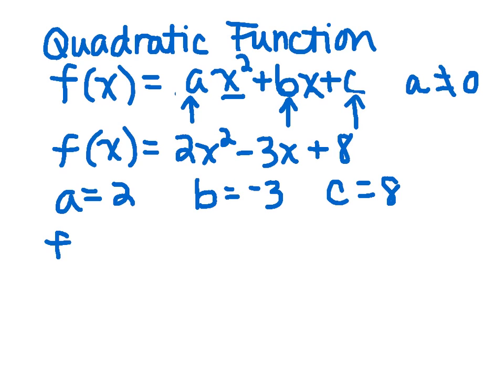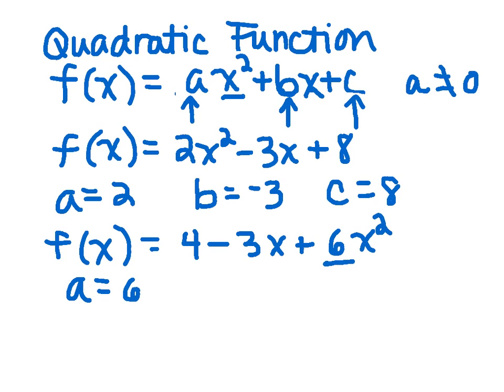Sometimes they might switch up the order on you. It would be like f(x) equals 4 minus 3x plus 6x squared. In this situation, although 4 is not a, 6 is the coefficient of the quadratic term. So in this, a would equal 6, b would again be negative 3, and c would equal 4.